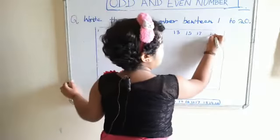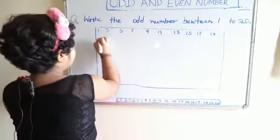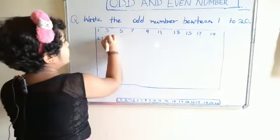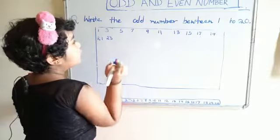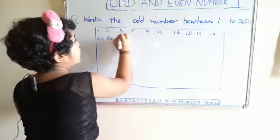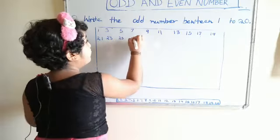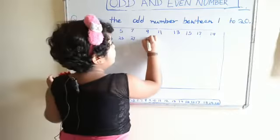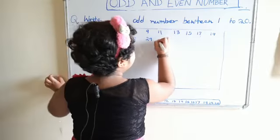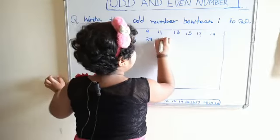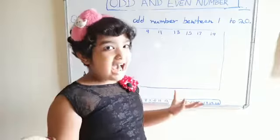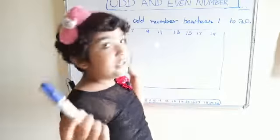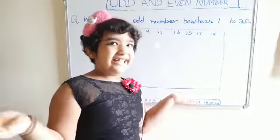वैर 19. These are the odd numbers between 1 to 20: 1, 3, 5, 7, 9, 11, 13, 15, 17, 19.